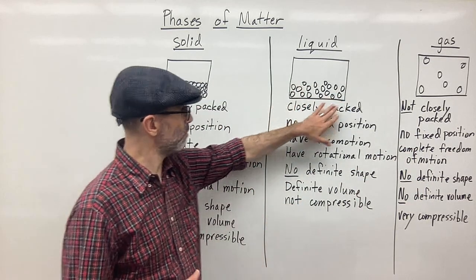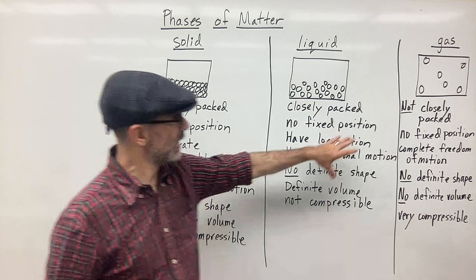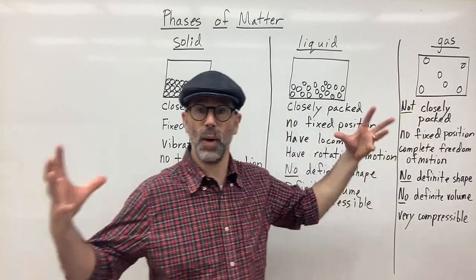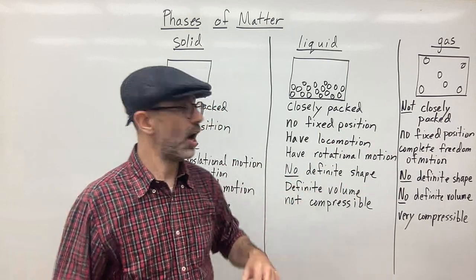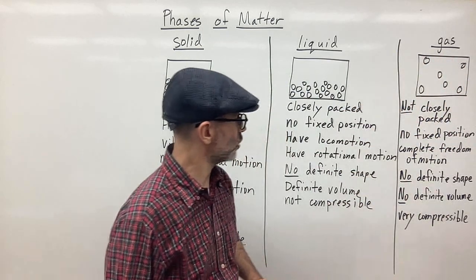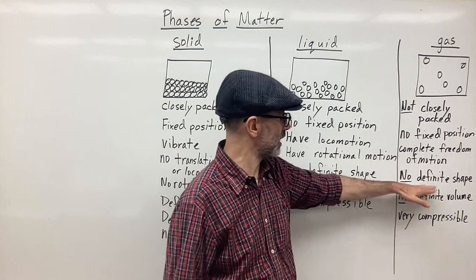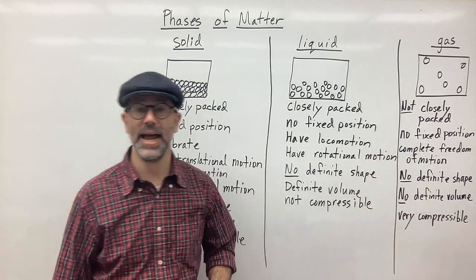But here we have complete freedom of motion. In liquids, the motion is there, but they stay close together. In gases, the motion is completely free. They are free to move away from each other, bounce around, move away, move close. They have total freedom of motion here. So this is what allows for gases to have these particular characteristics. And so this is what defines a gas as a gas.